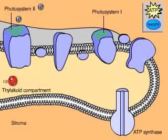Next, ATP and NADPH are used in the sugar-making process of the Calvin cycle.